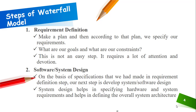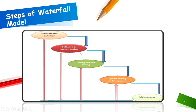System design helps in specifying hardware and software requirements and also helps in defining the overall system architecture. It is very important to note that once your design is completed, you cannot change your requirements. This is what waterfall is all about — if you are in the system design phase and find that your requirements are incomplete, you cannot go back to requirement definition. Your project will be terminated. Similarly, if you are at coding and unit testing and find the system design is not good, you cannot go back — your project will be terminated.